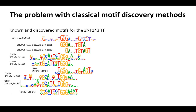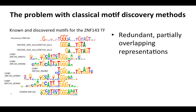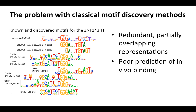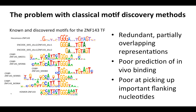The problem with classical motif discovery methods is that they tend to produce redundant and partially overlapping representations, as you can see on the left, where I gathered the motifs associated with ZNF143 across several databases. They are also often poor predictors of binding in vivo — even though in vitro you might be able to do experiments to get really good motifs, they don't always generalize in vivo. And they are also often poor at picking up important flanking nucleotides. They may get the core of the motifs, but the flanks are often missed.